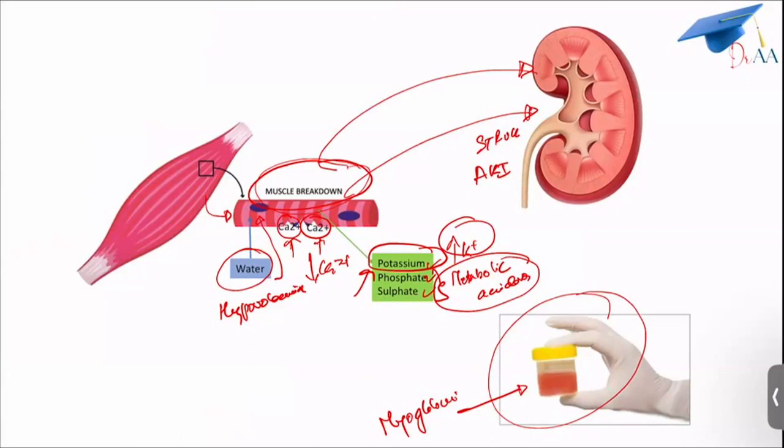The broken down muscle goes to the kidneys to be excreted. In the kidneys, it gets stuck, resulting in acute kidney injury. Some myoglobin gets excreted in the urine, causing dark colored urine. A urine dipstick might be positive because it cannot differentiate RBCs from muscle tissue. This is myoglobinuria.